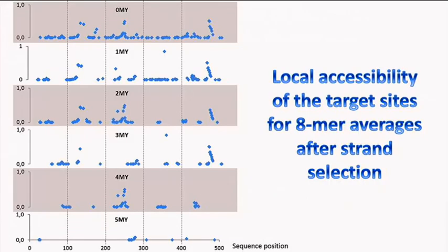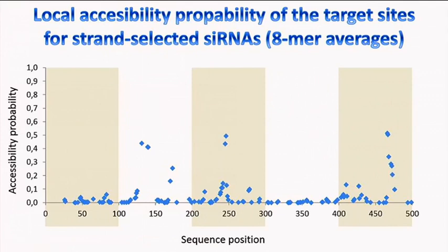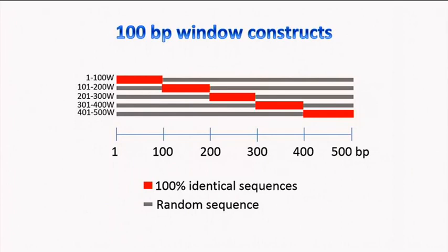Looking more closely at the zero million year construct, you can see clusters of accessibility. From 0–100 base pairs there are not many accessible sites; from 100–200 you have some; 200–300 also some; 300–400 has almost none; and 400–500 quite a lot. This brought us to the idea of making five 'window' constructs, where only 100 base pairs match the target and the rest is random sequence — one for each 100 base pair window.